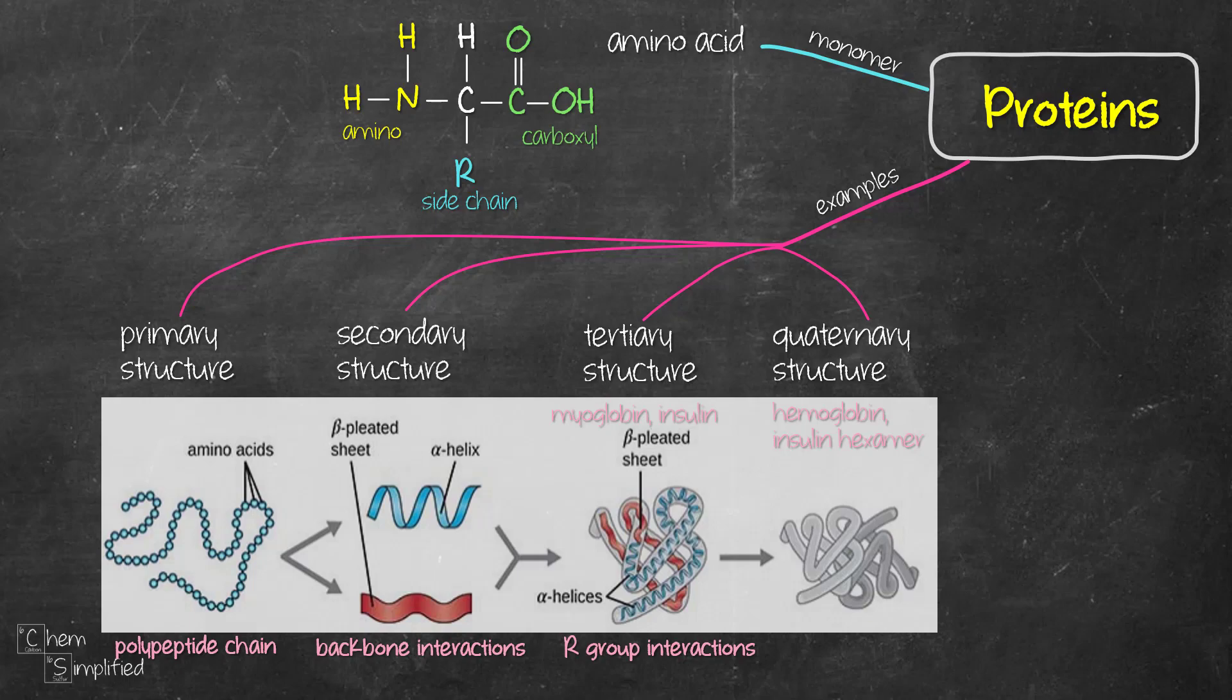And then we have some proteins that are made out of several polypeptide chains, which we normally call them as subunits. So when two or more subunits get together, we then get something called a quaternary structure.